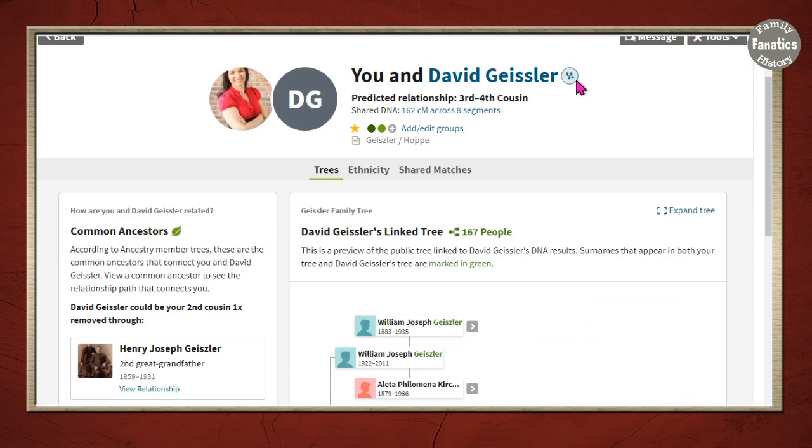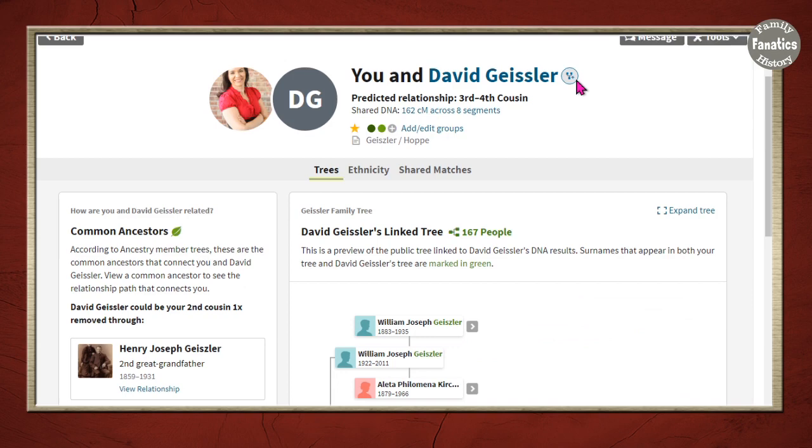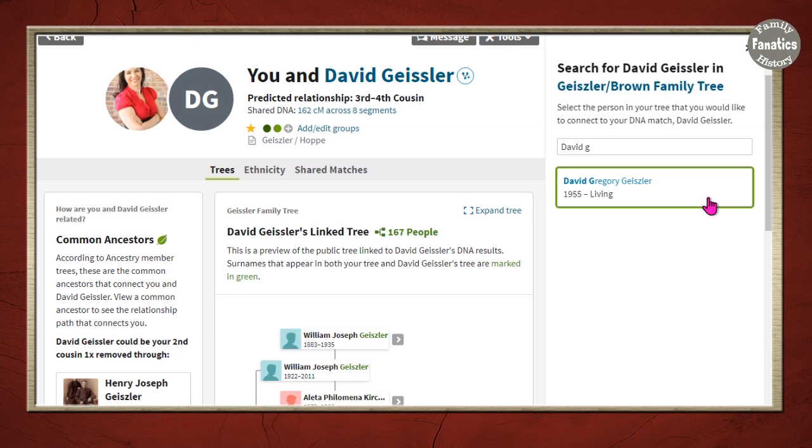So I actually have my distant cousin David in my family tree. And I can come over here and start typing David in my tree. And when I click on that name, all of a sudden this icon changes color.